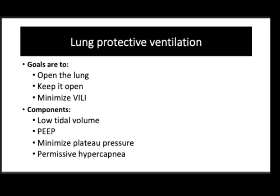The three main goals of lung protective ventilation are: first, to open the lung; second, to keep it open; and third, to minimize ventilator-induced lung injury (VILI), which is by far the most important goal of any ventilator strategy. Low tidal volume ventilation minimizes VILI, application of PEEP ensures lungs remain open, and minimization of plateau pressure decreases stress and strain on lung tissue. Permissive hypercapnia is the trade-off for low tidal volume and low plateau pressures — shooting for perfect blood gases will destroy patients' lungs very fast.